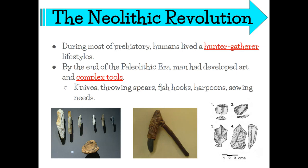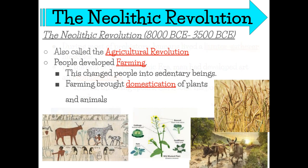During most of prehistory, humans lived as hunter-gatherers. They set up complex tools — knives, throwing spears, fish hooks, harpoons, sewing needles — things they needed to make their lives easier. Early humans were the first hunter-gatherers. From the nomadic tribes they lived in, they would follow the food. They no longer had to do that once things changed.